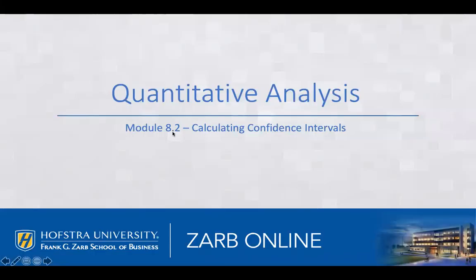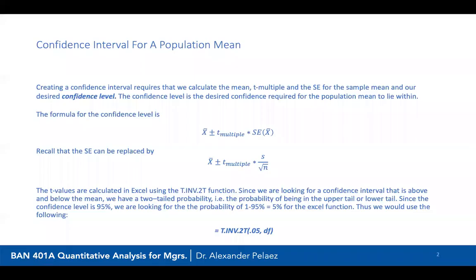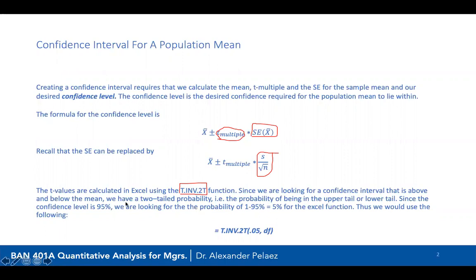Now we're going to calculate the confidence interval. Recall there's a multiple added to our sample mean. We need to calculate the t-multiple from the t-distribution, then multiply it by the standard error of x-bar, which is s divided by the square root of n. T-values are calculated in Excel using T.INV.2T. Since we're looking for a confidence interval above and below the mean, we use a two-tail probability. In Chapter 9, we'll use one-tail scenarios.